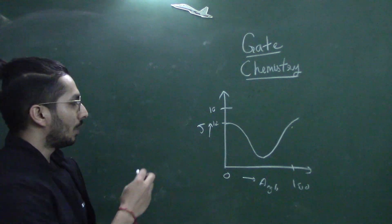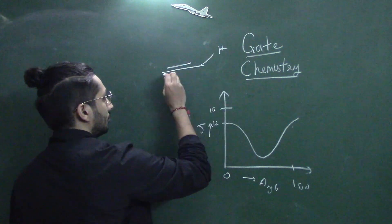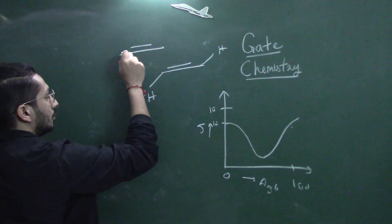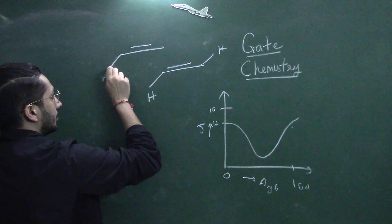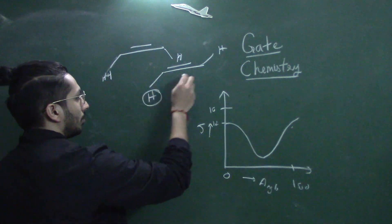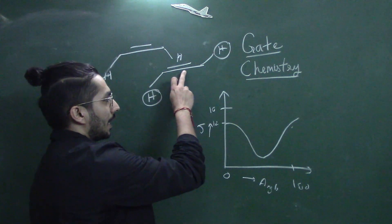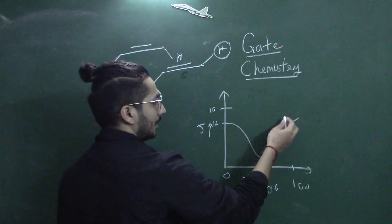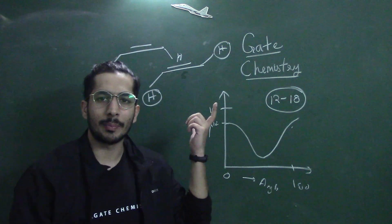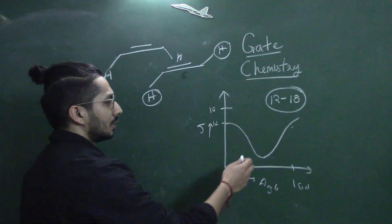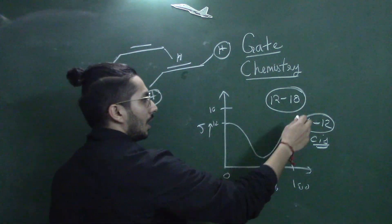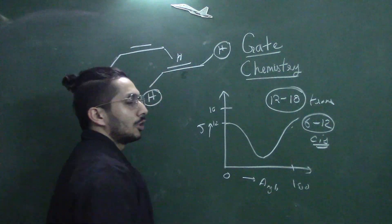Let's look at the two systems. For alkenes, in one case the hydrogens are cis and in one case they are trans. For trans coupling in alkenes, the dihedral angle is close to 180 degrees, so the trans coupling value ranges from 12 to 18 Hz. For cis coupling, the angle is approximately 0 degrees, so the value ranges from 6 to 12 Hz.